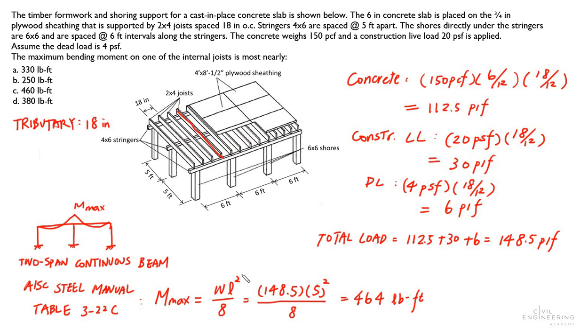The maximum bending moment is going to be w times l squared divided by 8, and w is your line load, the uniform distributed load of 148.5, and l is the span. So it's going to be 5 feet times 5 squared divided by 8, so your maximum moment is 464 pound-feet.